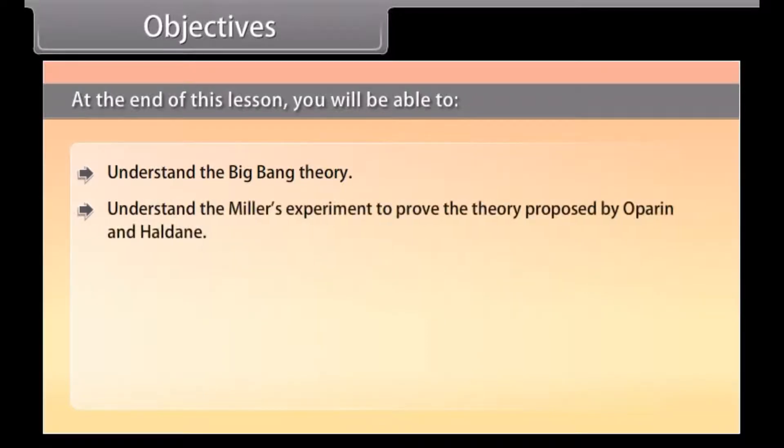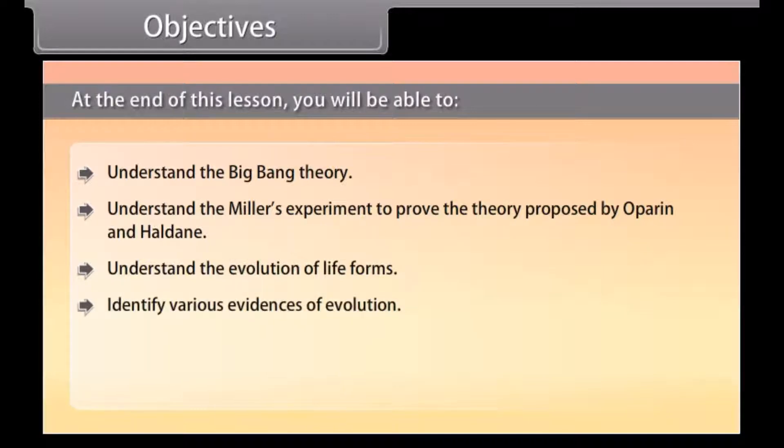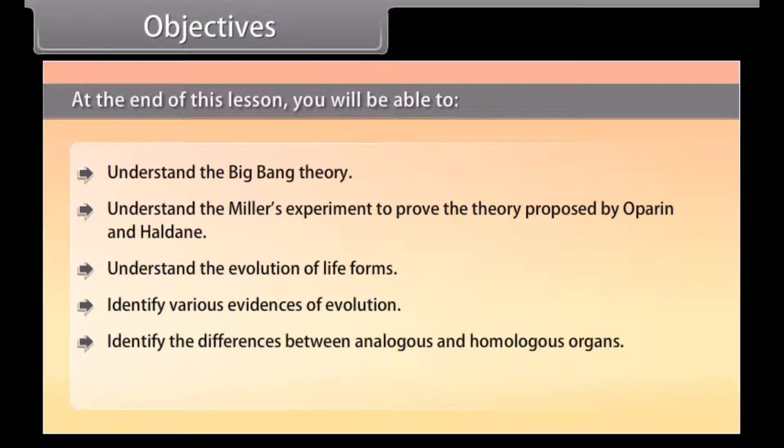Objectives. At the end of this lesson you will be able to understand the Big Bang Theory, understand Miller's experiment to prove the theory proposed by Oparin and Haldane, understand the evolution of life forms, identify various evidences of evolution, identify the differences between analogous and homologous organs, and understand the concept of adaptive radiation.